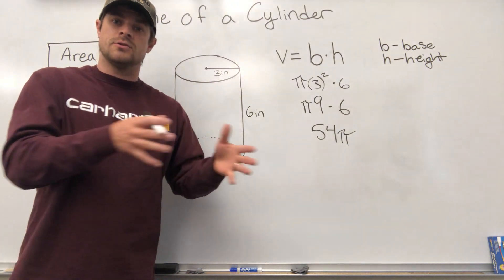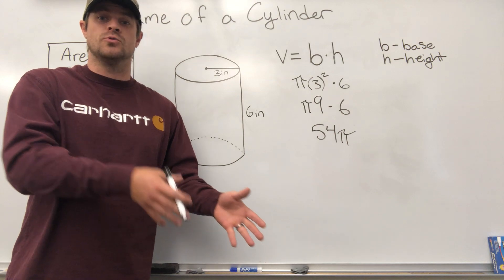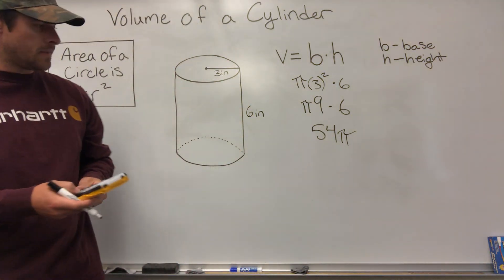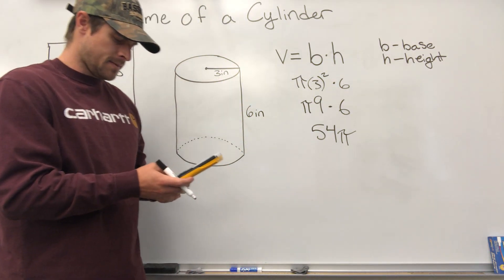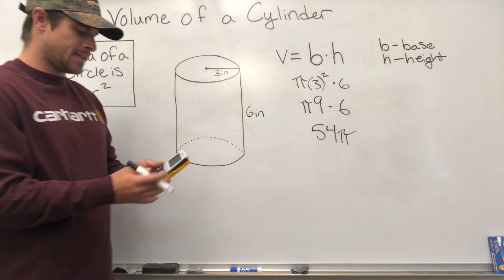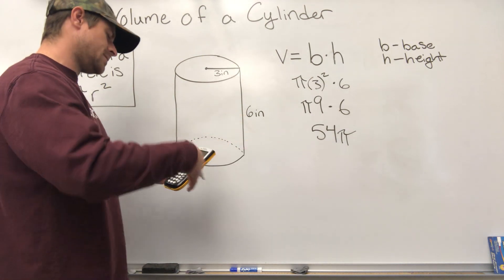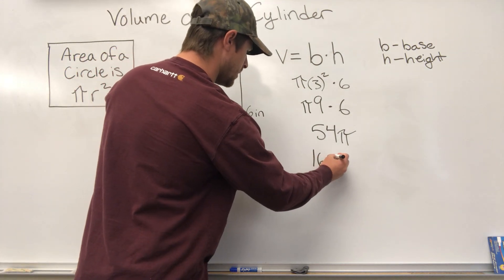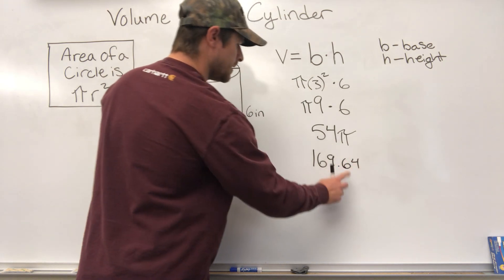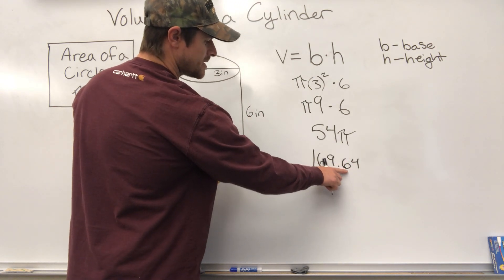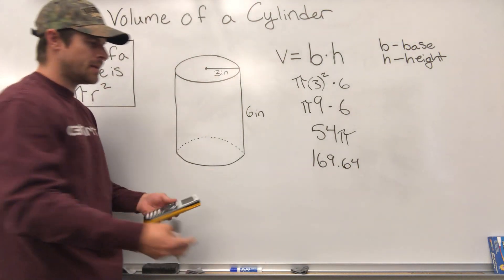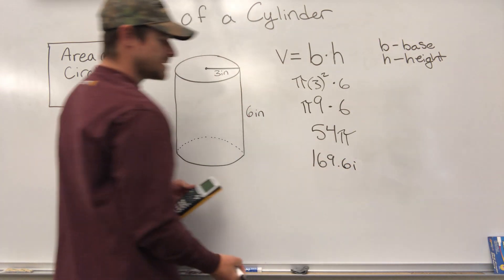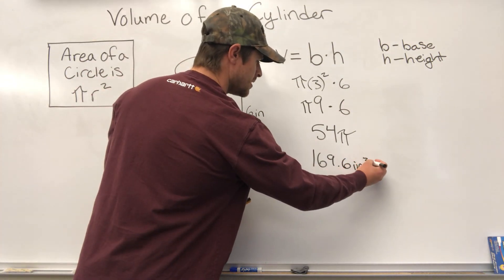Other times you might have a worksheet where you're being asked to round to the nearest tenth. What you would then need to do is take a calculator and punch those numbers in: 54 times pi. In this case I get 169.646... If asked to round to the nearest tenth, that's 169.6 — the four tells me not to round the six up, so my final answer would be 169.6 inches cubed.